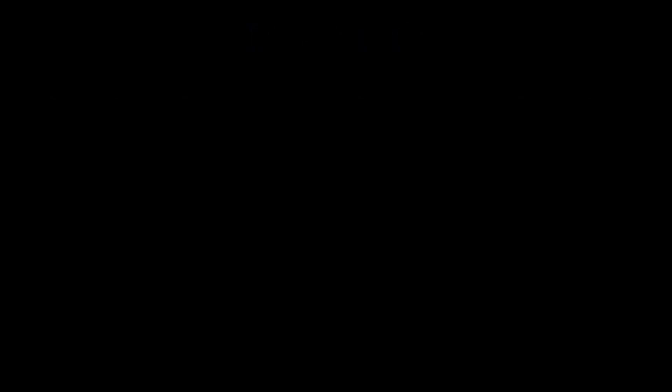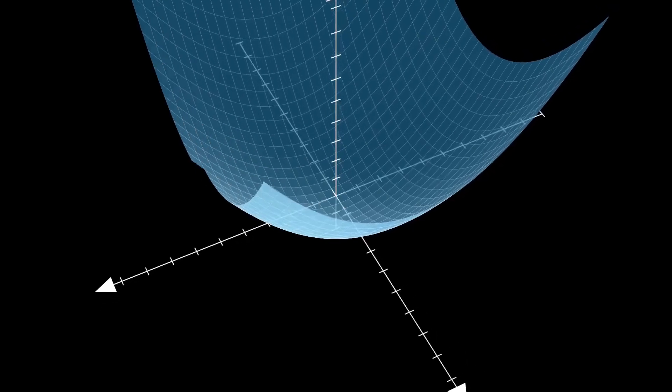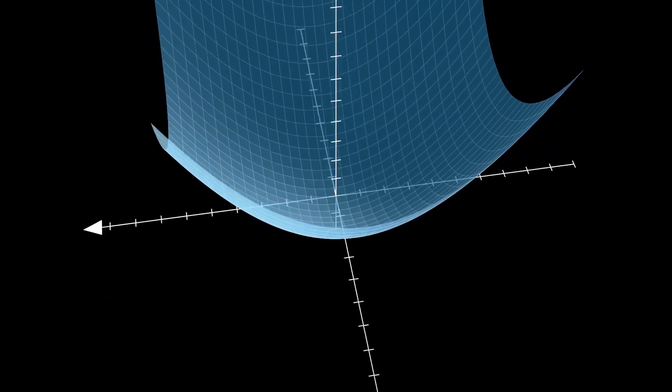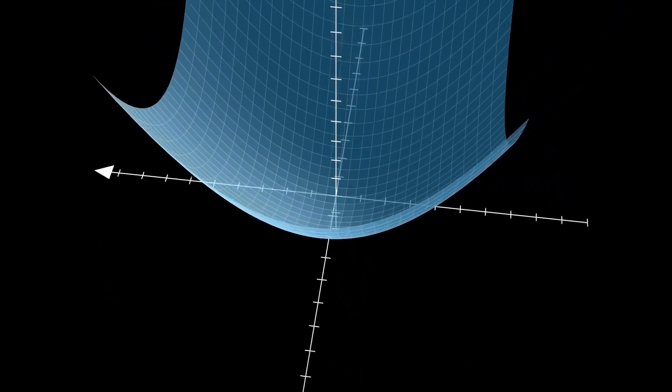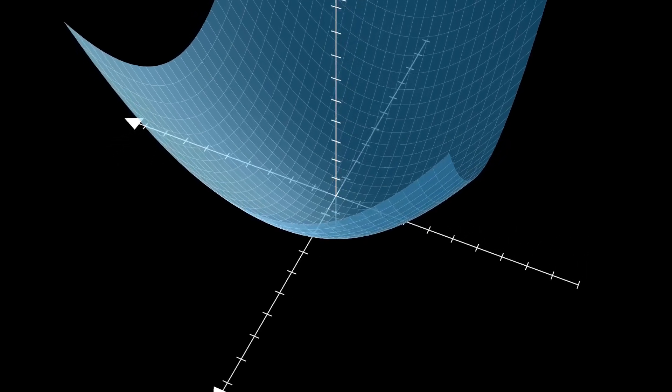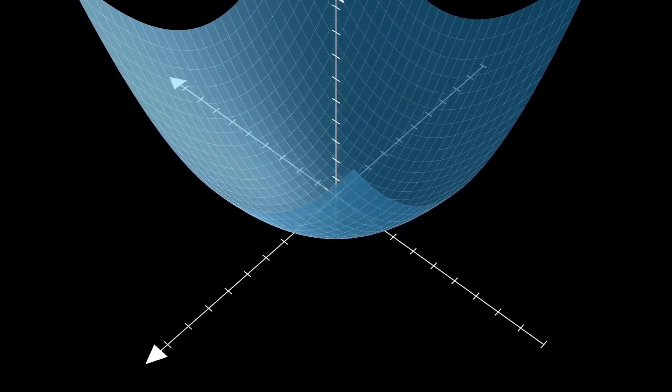Consider the function x squared plus y squared. This function is convex because both x squared and y squared are convex, and adding convex functions preserves convexity.